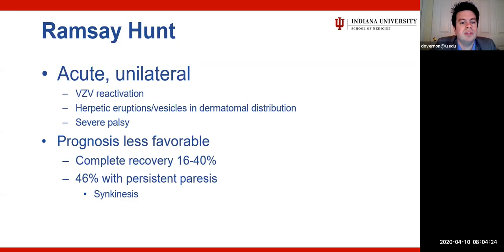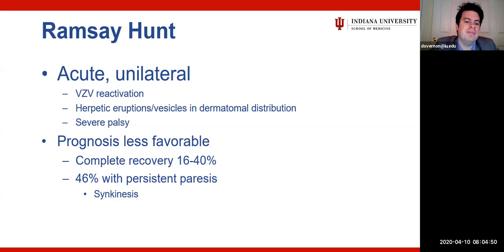A smaller subset — anywhere from 6 to 27% in the literature — has partial recovery with persistent weakness, asymmetry, and synkinesis. Ramsay-Hunt is the second most common cause of incomplete facial paralysis, excluding iatrogenic and neoplastic etiologies, with an incidence of about 20 to 40 per million. Recovery is much worse: complete recovery rates are only 16 to 40%, with up to half of patients experiencing persistent paresis and especially synkinesis.